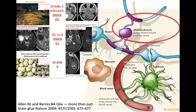We've talked a lot about astrocytic tumors and microglial cells. Now we're going to shift our focus to the last part of the glial cells — the oligodendrocytes and the oligodendrogliomas. Thanks for watching.